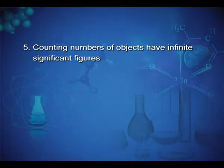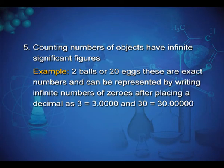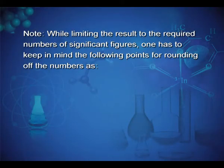The fifth rule of significant figures: counting numbers of objects have infinite significant figures. Example: 2 balls or 20 eggs. These are exact numbers and can be represented by writing infinite numbers of zeros after placing a decimal, as 3 = 3.000 and 30 = 30.0000.